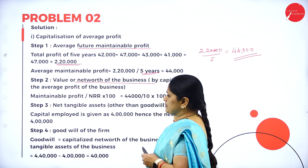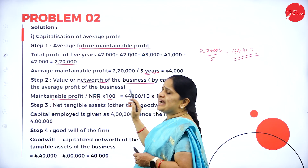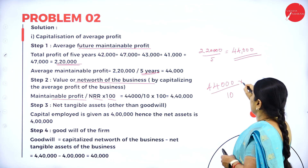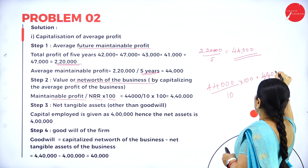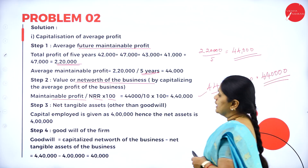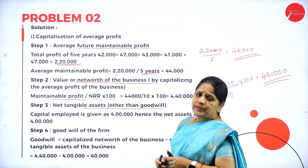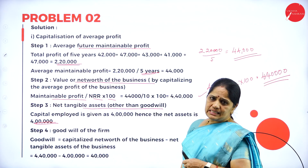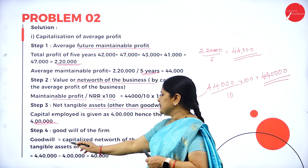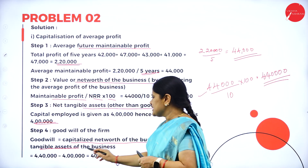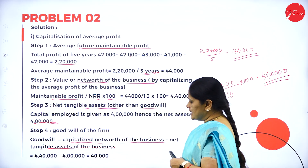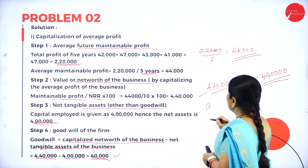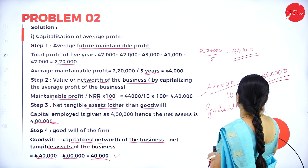To calculate the net worth of the business: maintainable profit of 44,000 divided by NRR of 10, multiplied by 100 equals 4,40,000. The net tangible assets — since no separate value is given, we assume the capital employed of 4,00,000 is the net asset value. Goodwill equals capitalized net worth minus tangible assets: 4,40,000 minus 4,00,000 equals 40,000. So the goodwill value is Rs. 40,000.